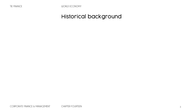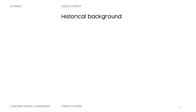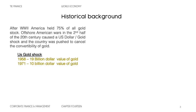I'm going to give you some historical background for you to know where we are standing right now as history and world economy. After World War II, America held 75% of all gold stock, and offshore American wars like the Vietnam War and Korea in the second half of the 20th century caused a U.S. dollar-gold shock, and the country was pushed to cancel the convertibility of gold. In 1958, the United States held around $19 billion valued in gold, and by 1971 it was $10 billion — almost 50% of gold lost.